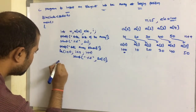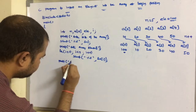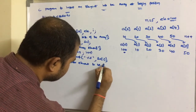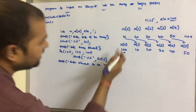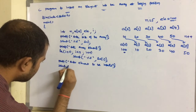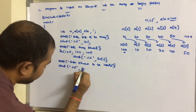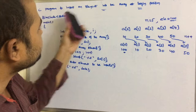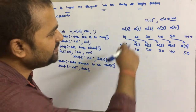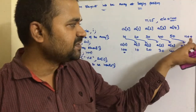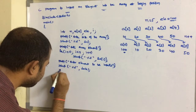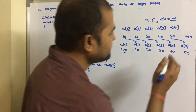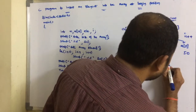Next we read the element to insert: printf("Enter element to be inserted") and scanf("%d", &ele). In this example, ele equals 100. Since we are inserting an element, the first statement in the logic is n++. Initially n is 5, so now n becomes 6.